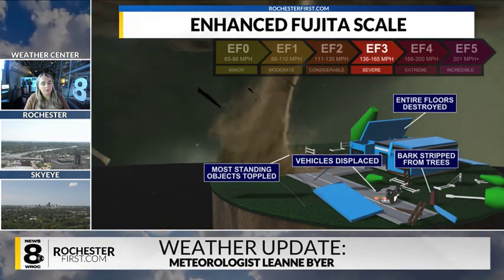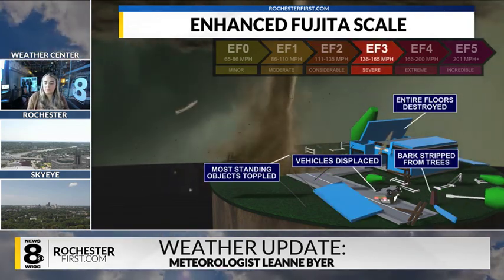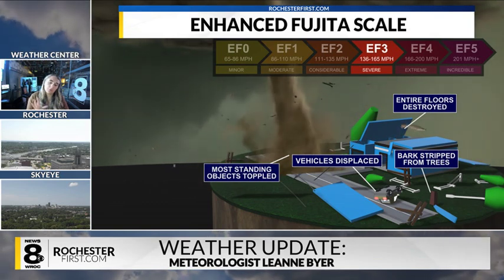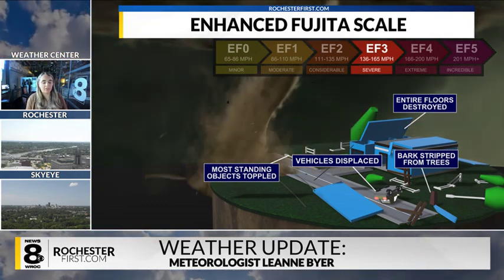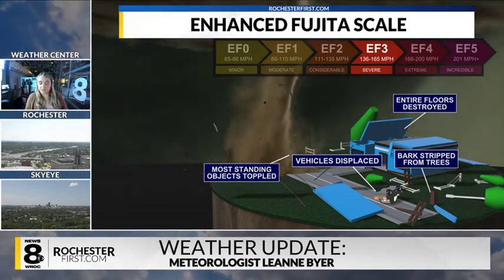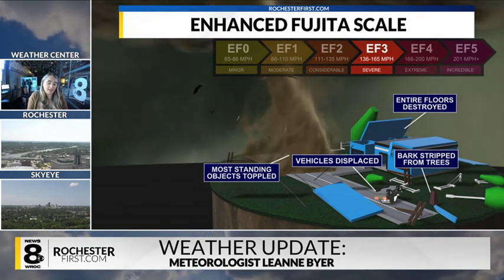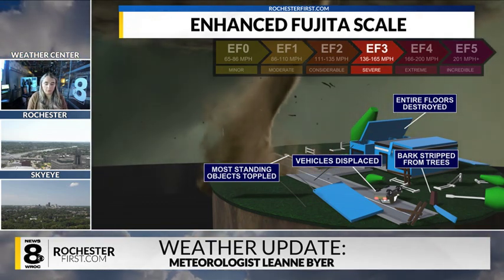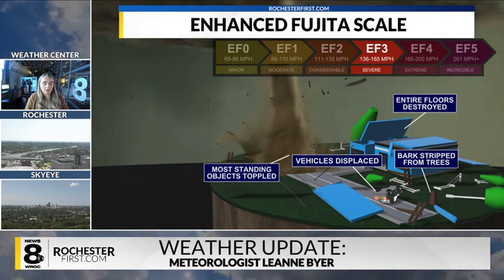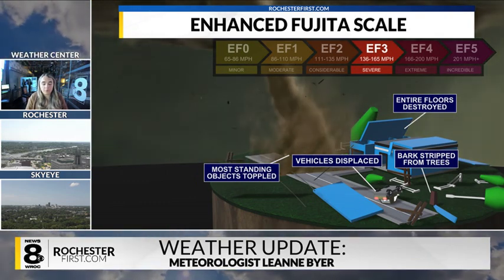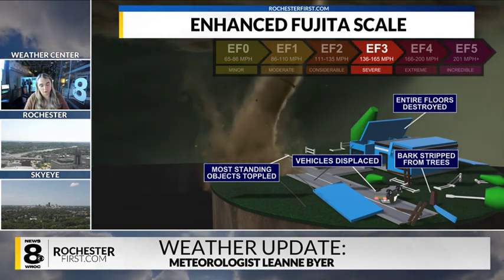Heading now to an EF3 tornado, where wind speeds are between 136 and 165 miles an hour. This is definitely more severe damage. Most standing objects are unfortunately toppled, vehicles are displaced, bark is stripped from trees, and entire floors of a home can be destroyed.